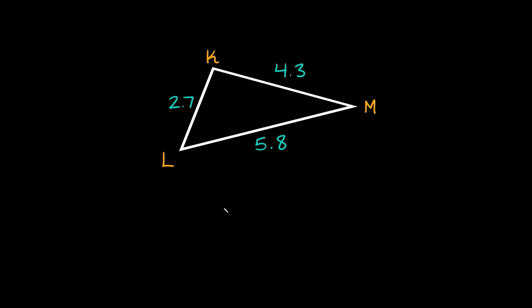What's up you freaking geniuses? So in order to list angles of a triangle from smallest to largest, you just have to look at which angle opens up to which side.